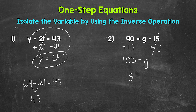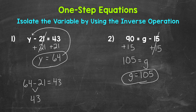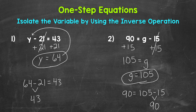We can rewrite this with the variable coming first. That is our solution. Now let's check that solution by plugging 105 in for g. So 90 equals 105 minus 15. 105 minus 15 does equal 90, so our solution is correct. g equals 105.